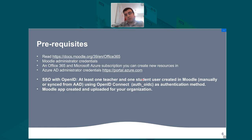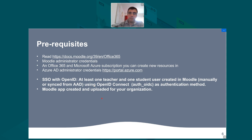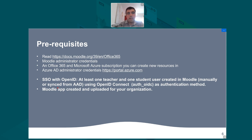You need Azure Active Directory administration access for portal.azure.com and single sign-on with OpenID. You need at least one teacher and one student created in Moodle manually or synced from Active Directory, and they must log into Moodle using OpenID Connect. There's a PowerShell script available in the Local Office 365 plugin to create the application quickly — you copy and paste the secret and application ID to the OpenID plugin settings, and single sign-on is working. The most complicated part is creating and uploading the Moodle app for your organization.